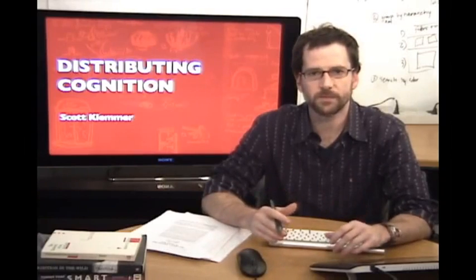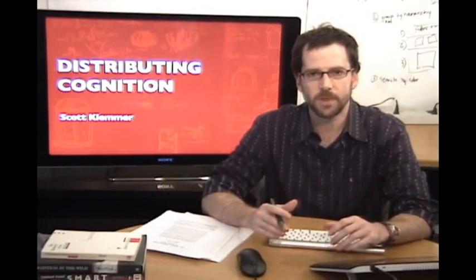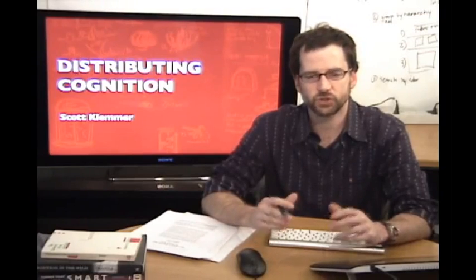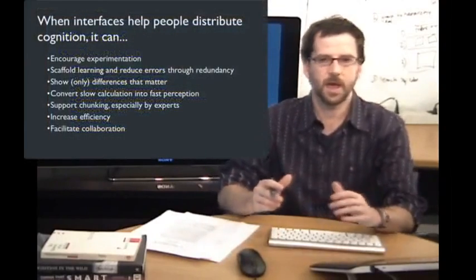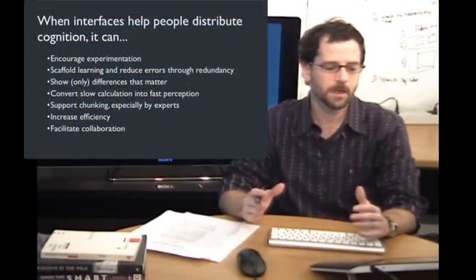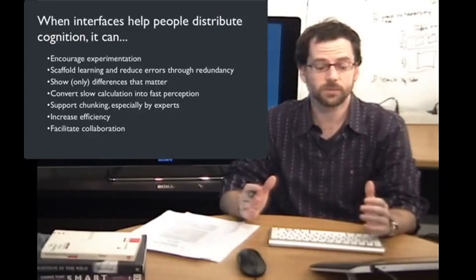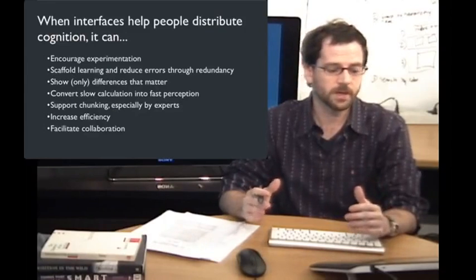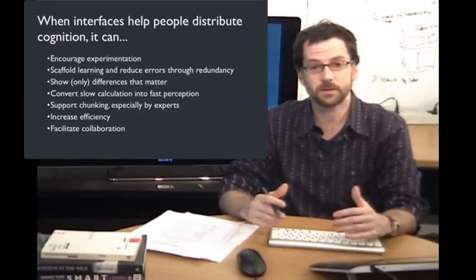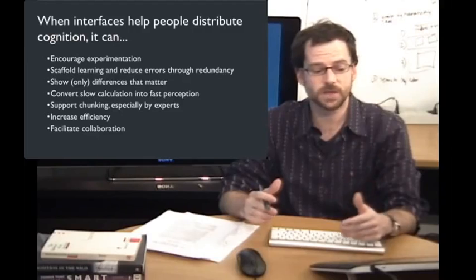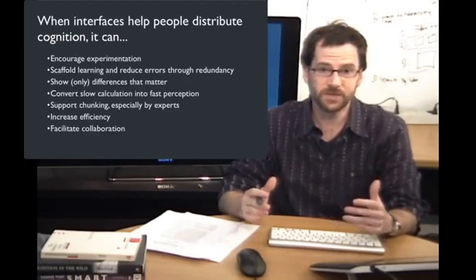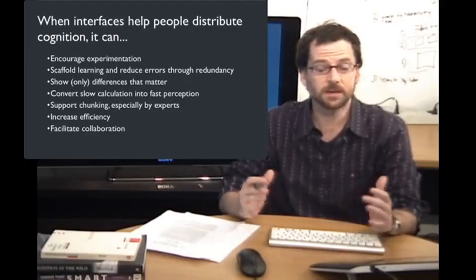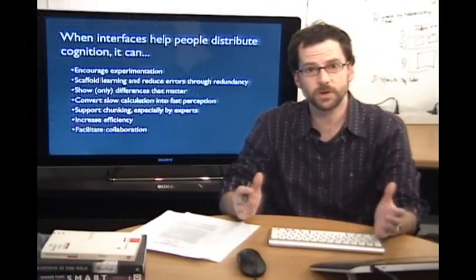There are several different ways that interfaces can help people think more fluidly by distributing cognition into artifacts in the world. When interfaces help people distribute cognition, it can encourage experimentation, scaffold learning and reduce errors through redundancy, show only the differences that matter, convert slow calculation into fast perception, support chunking especially by experts, increase efficiency of interactions, and facilitate collaboration. Let's go through these one at a time.